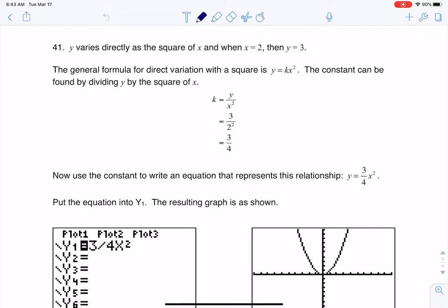So here, I see y varies directly. That directly is going to be an important piece of information, and I see square of x. So whenever I hear direct variation, I'm going to go with multiply, and this square of x is going to help me out too.